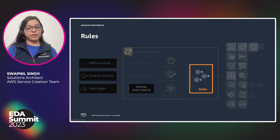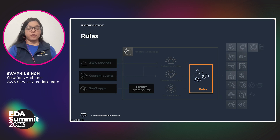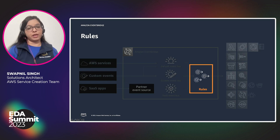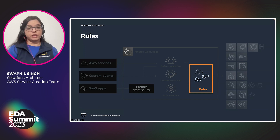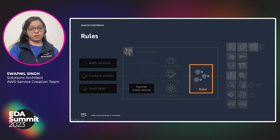Once you have an event bus and event source, you can associate rules with the event bus. Rules allow you to match against values in the metadata and payload of ingested events, and you can determine which events get routed to which destinations using those rules. Rules can also match schedules — if you want to schedule an event every five minutes or at a certain time interval, that is also supported.